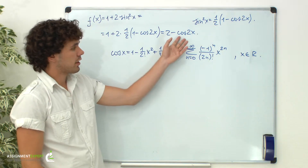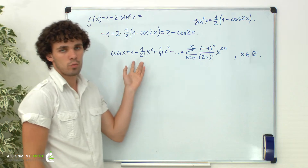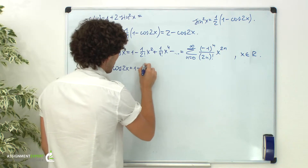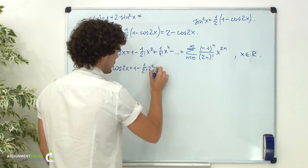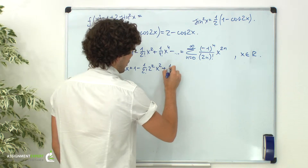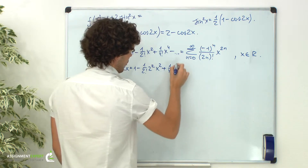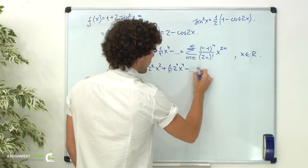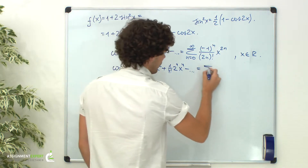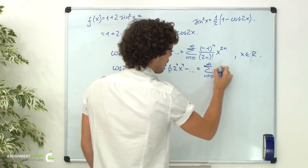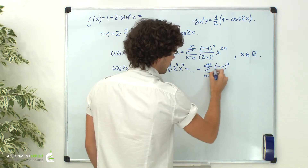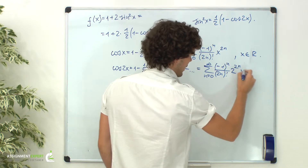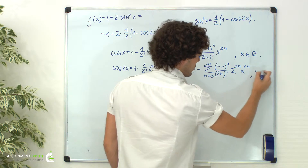In our case, we have the cosine of 2x, so we need to transform this formula. Cosine of 2x equals 1 minus 1 over 2 factorial times 2 squared times x squared plus 1 over 4 factorial times 2 raised to the 4th power times x raised to the 4th power, and so on. In sigma notation, this is the sum for n from 0 to infinity of negative 1 raised to the power of n over the factorial of 2n times 2 raised to the power of 2n times x raised to the power of 2n, also for real x.